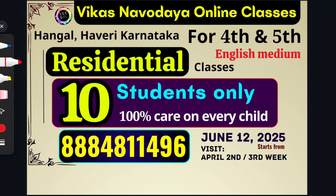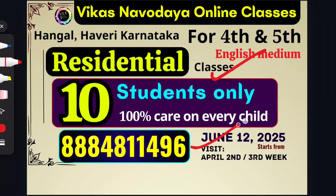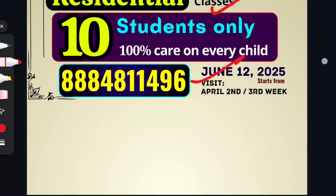Dear parents, we are also conducting residential classes for fourth and fifth standard students. Purely English Medium — we are taking only 10 students from each class. Contact for residential classes: 388-4811-496.